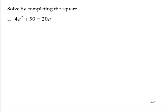Solve by completing the square. 4a squared plus 50 is equal to 20a. We have to get this to the form a squared plus ba equals k. I'm going to subtract 20a from both sides, and I'll also subtract 50 from both sides. That gives me 4a squared minus 20a is equal to negative 50.